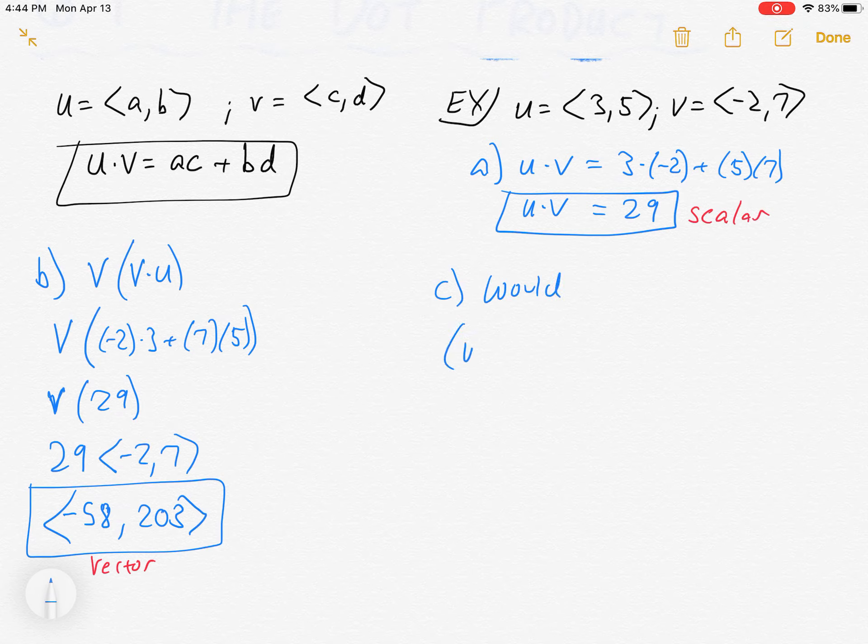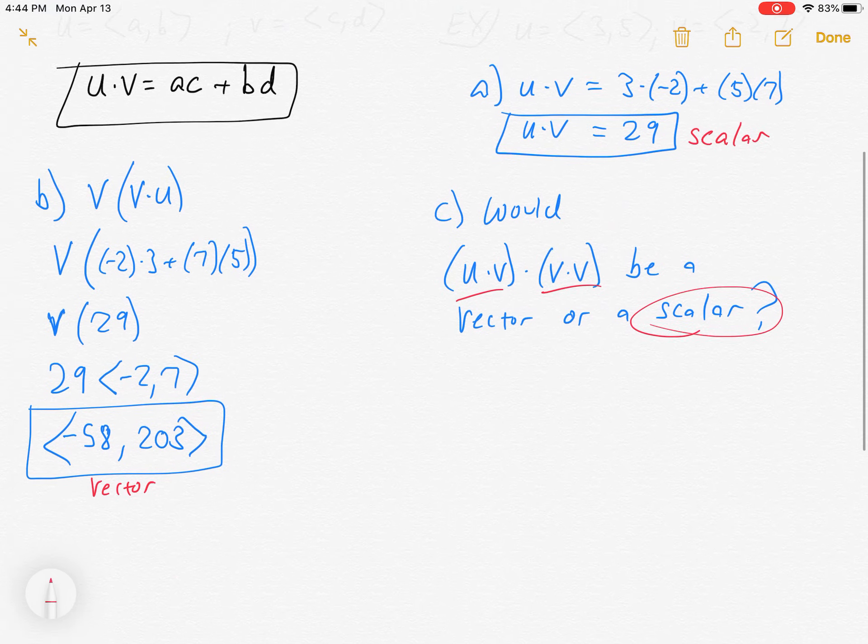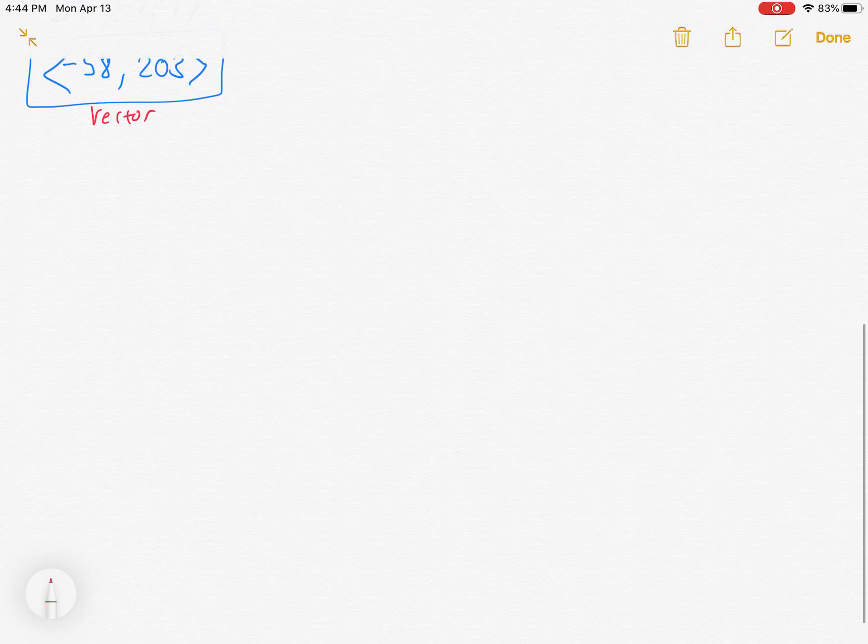So for example, let's not work this one out, but let me just ask this question. Would u dot v times v dot v be a vector or a scalar? Well, let's see. That's a scalar. That's a scalar. A scalar times a scalar is basically mathematics as you've known it up to this point. 7 times 3 is 21. Scalar times a scalar is a scalar. So this would be a scalar, right?